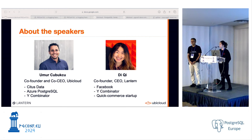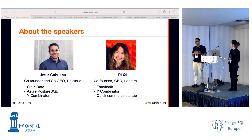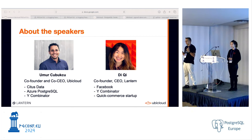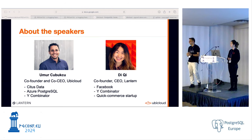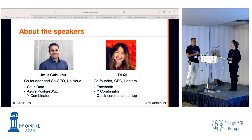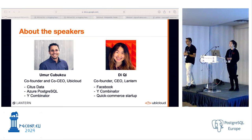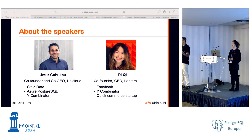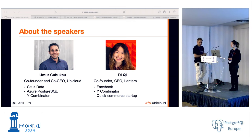Lantern is building Postgres for AI applications. I'm Umur, one of the co-founders and co-CEO of UbiCloud. Before UbiCloud, I was one of the founders at Citus Data, a distributed Postgres database. Who here is familiar with Citus? More than half the crowd. That was our first deep foray into the Postgres world. Citus Data was acquired by Microsoft, and after that I ran the Azure Postgres product together with Özgün. I then went back to Y Combinator as a partner, where I met Dee.